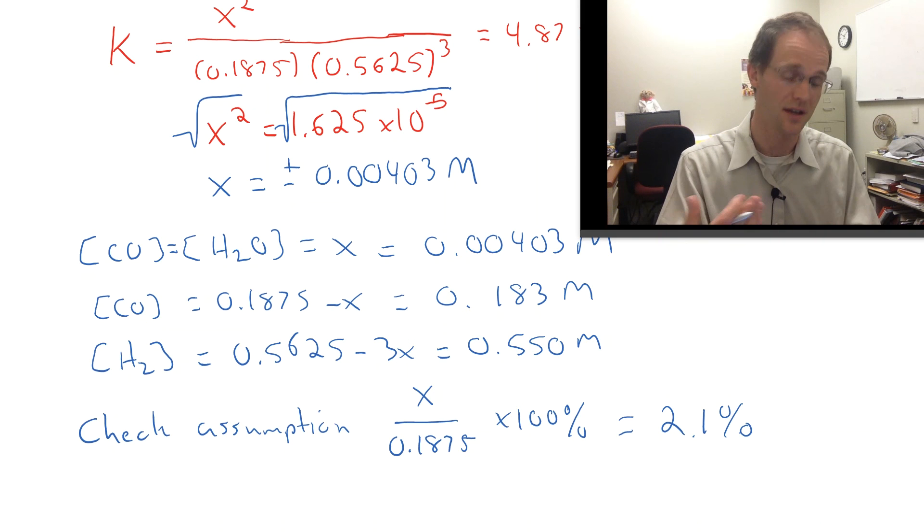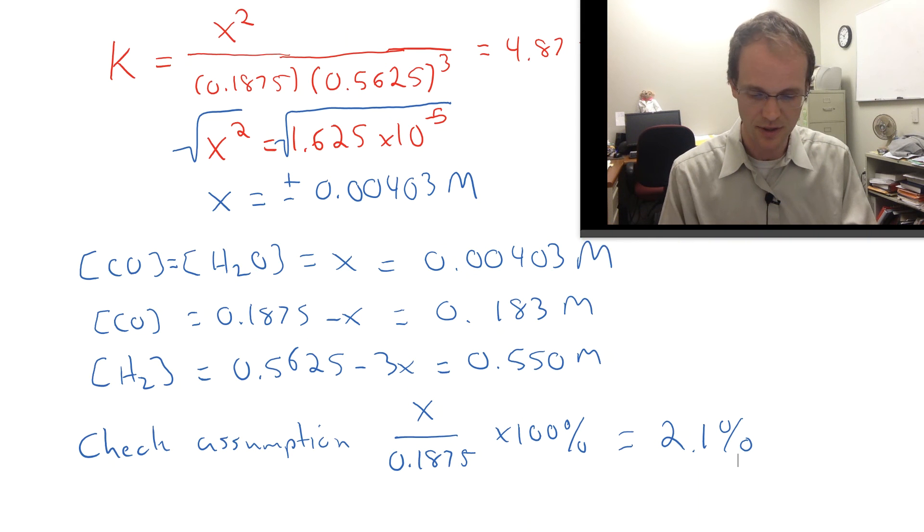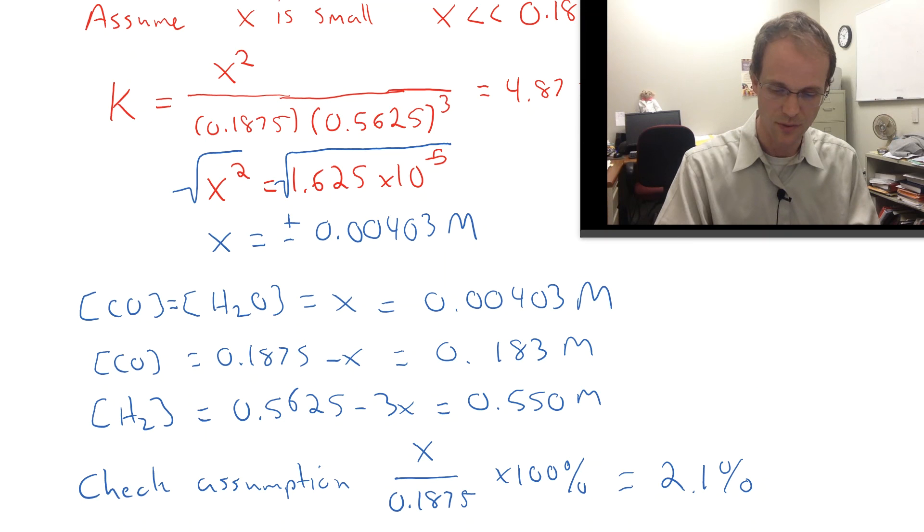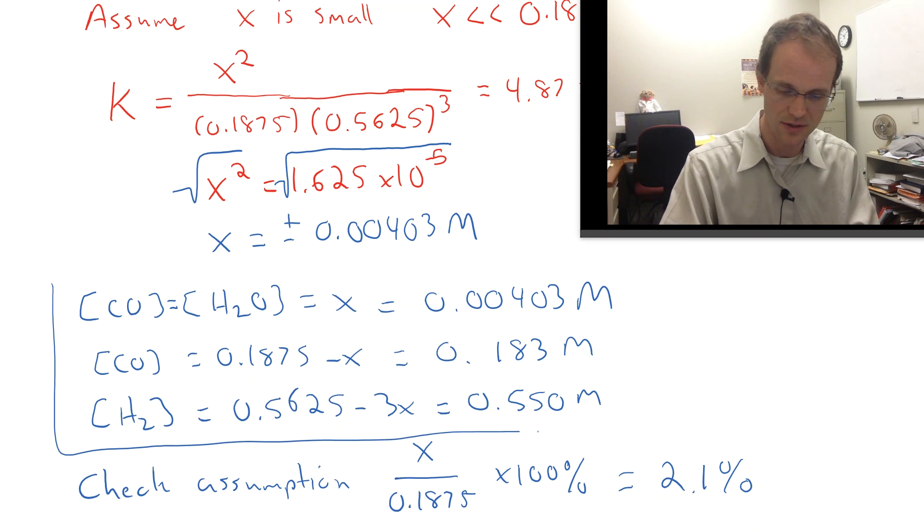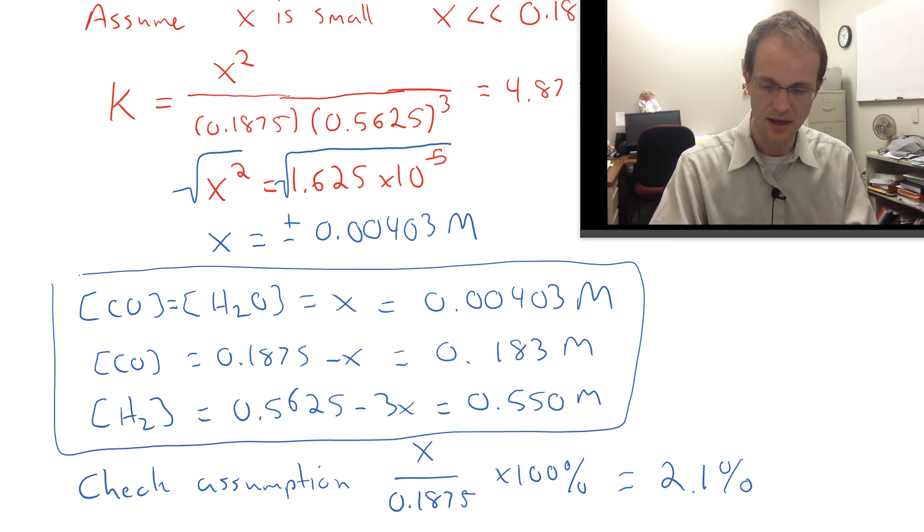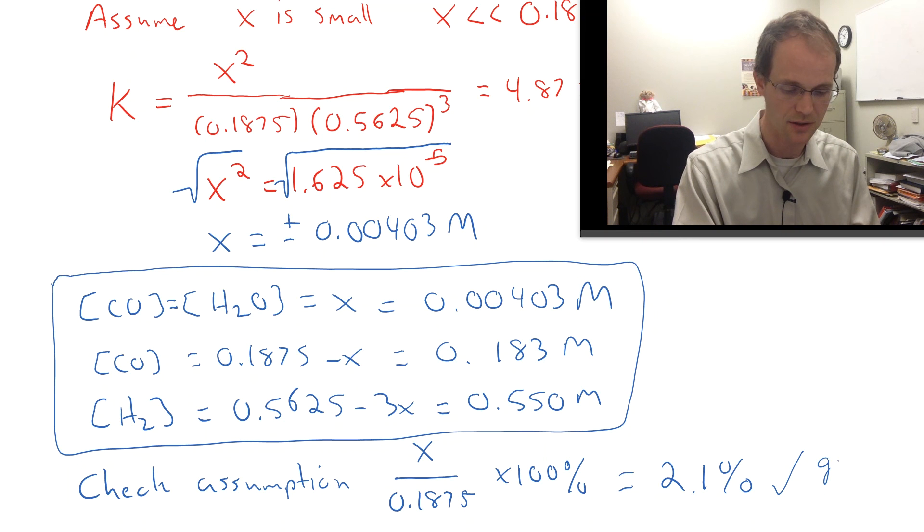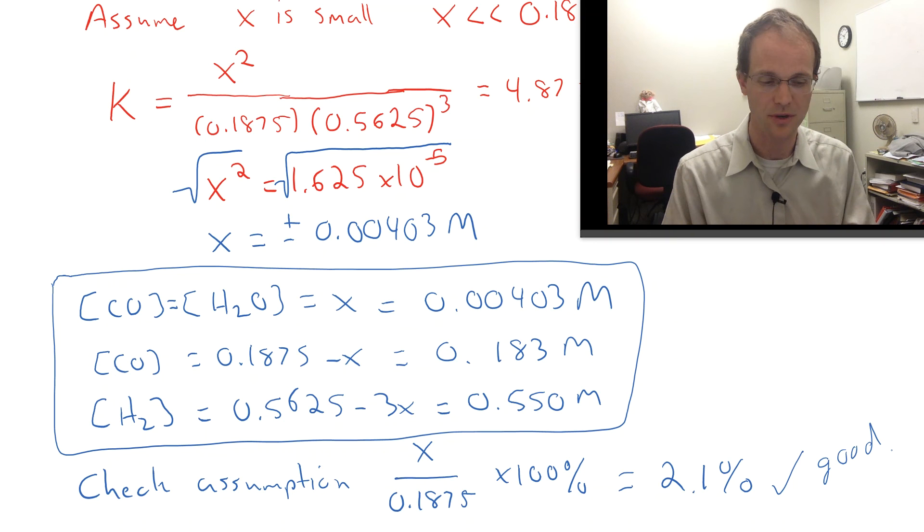If we get more than 5%, we've got to do some other things, and hopefully at some point I'll have another video for that. So here we go. We've actually got our answers. We know all of those equilibrium concentrations. We found them there, and we also know that our assumption is good, and so we have now solved this and found those equilibrium concentrations. So go ahead, do your homework, have fun, and hope this video helped. Thanks.